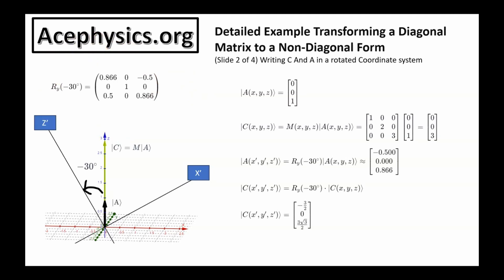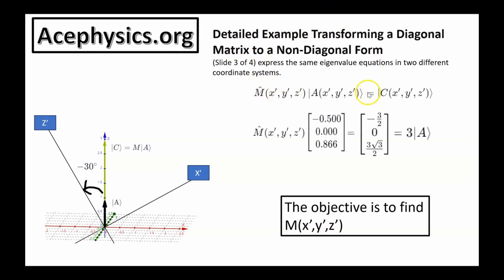This matrix is the operator that transforms the coordinates from one basis to another. I want to represent the entire problem in the rotated coordinate system — meaning the vectors (rank 1 tensors) and matrices (rank 2 tensors) in the new coordinate basis. Vector A in the prime coordinate system is negative 0.5, 0, 0.866, and vector C in the prime coordinate system is vector A multiplied by 3. The objective is to find M in the prime coordinate system — that is the similarity transformation, finding your operator in a new rotated coordinate system.